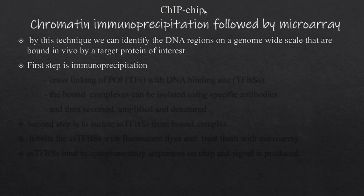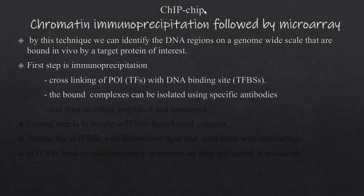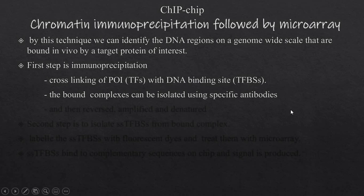Using ChIP-chip, we can find out different genomic regions genome-wide that bind to a certain protein of interest in vivo, inside the cell. We can identify those binding regions through this process. The first step is immunoprecipitation: we have the whole genome and a protein of interest — in this case, a transcription factor — and we allow it to bind to its specific sites in the DNA, which are not yet known.